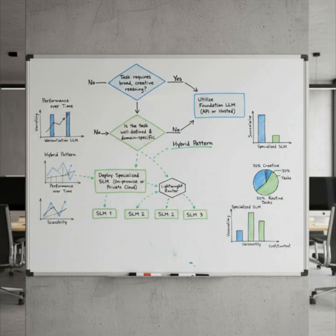But you don't have to choose just one. An advanced pattern emerging is the hybrid approach, often called a mixture of experts. In this architecture, a very simple, lightweight router model first classifies an incoming request. Based on the classification, it routes the request to one of several specialized SLMs.